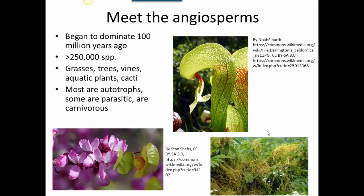Most angiosperms are autotrophs, making their own food through photosynthesis — a common trait to all plants. However, there are a few angiosperms that are parasitic and non-photosynthetic, like the dodder plant shown here growing on top of other flowering plants. It's an example of a parasitic flowering plant that taps into the food its host plants have made.